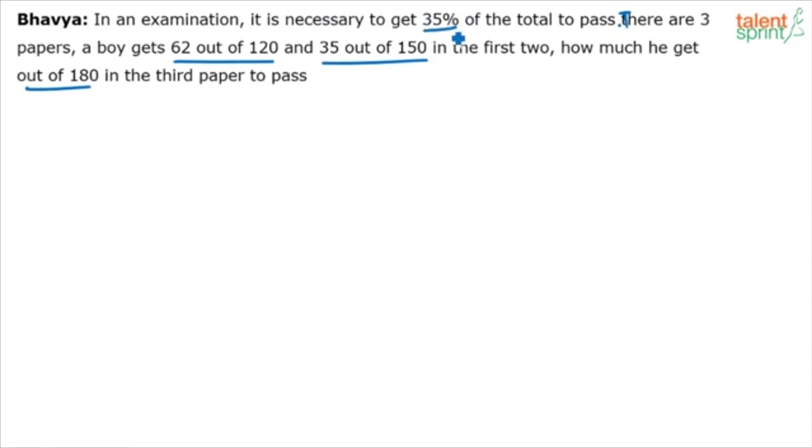How much should he get to pass? 35%. 35% of the total. So, 35% of total. What is the total? See, first paper maximum is 120. Second paper, the maximum is 150. And the third paper, the maximum is 180. The total value of each paper is given, right? Maximum that you can score: 120, 150 and 180. So, 35% of this will suffice to pass.